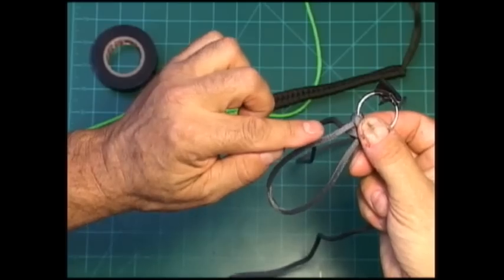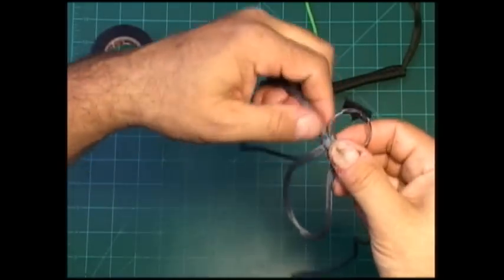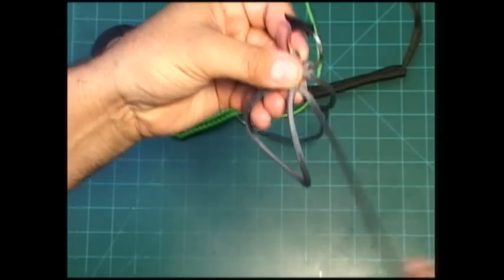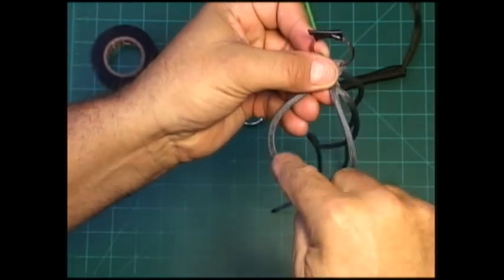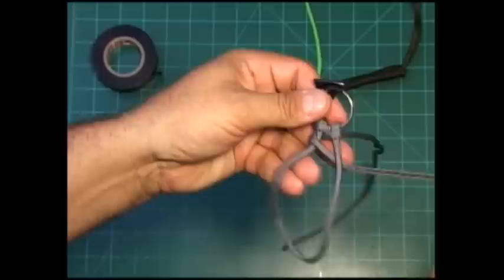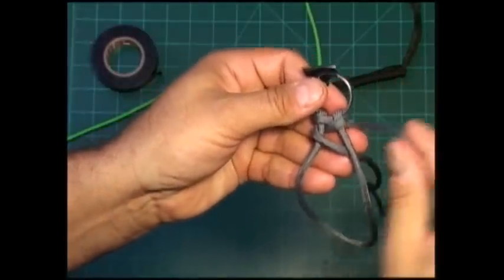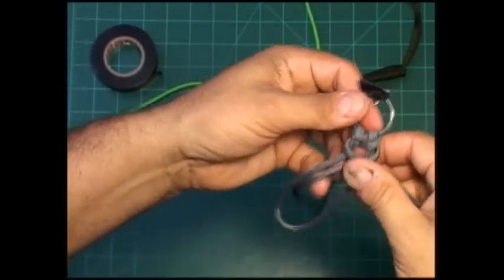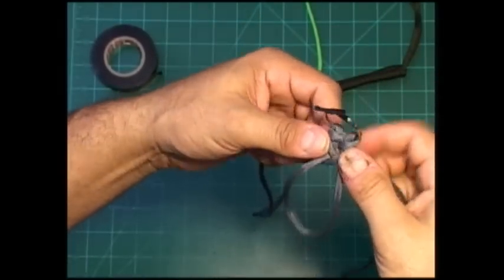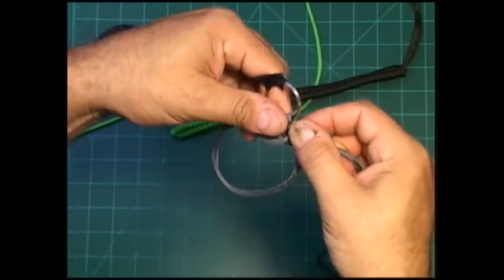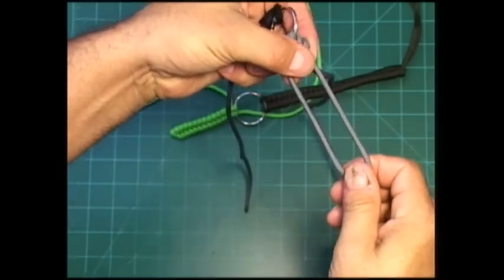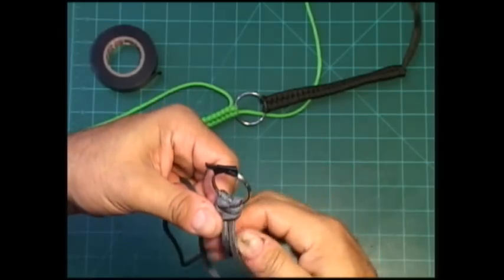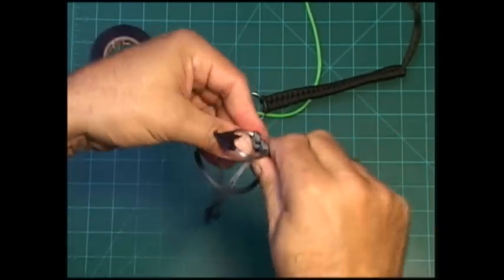And again we go over, under, over, under. And then this one goes over and under. You can see that there, go over and under. And then we'll just take that and we'll just pull it snug just like that. And then we'll take our cord and we'll just pull it down. And this will start taking shape just as soon as we get a few more going here, so I'm just going to do a couple real quick.